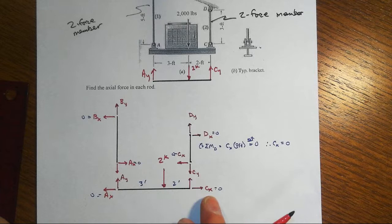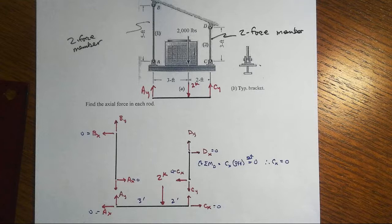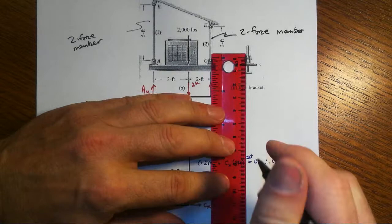That makes all of this clutter unnecessary that we see down here. If you recognize two force members, it sure makes your life a lot easier. If you don't recognize that, you're stuck with this exploded free body diagram.